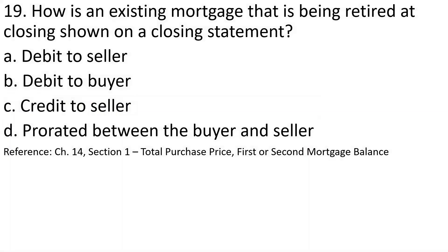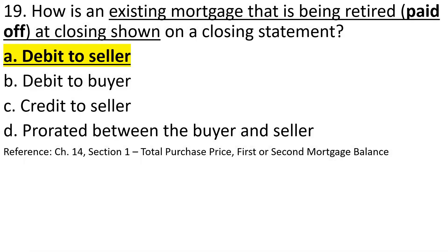Number nineteen: An existing mortgage that is being retired — meaning paid off — at closing is shown on the closing statement as a debit to the seller. Note that exam questions are written to confuse, so 'retired' means paid off. The seller has the current mortgage; since it's being paid off from the money the buyer pays, it is debited from the seller's proceeds.